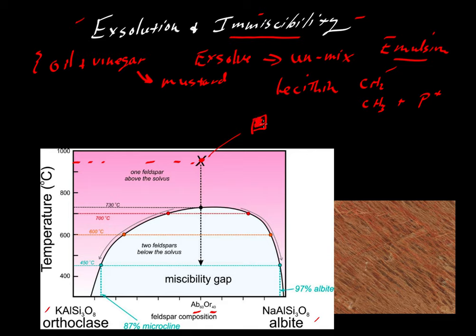There will all be just one homogenized composition with the potassium and sodium atoms quasi-randomly scattered about that structure. But once that material cools to a temperature of 730 degrees centigrade, then those potassium and sodium atoms are going to separate. And we will have a separation into an albite rich composition and an orthoclase rich composition.